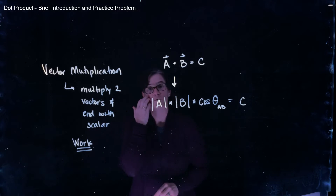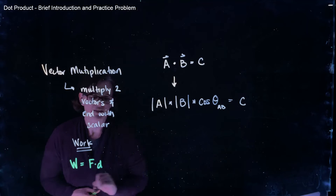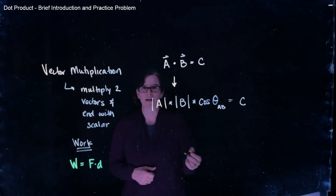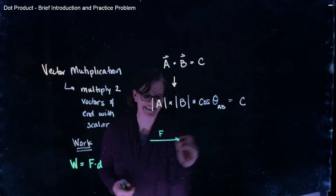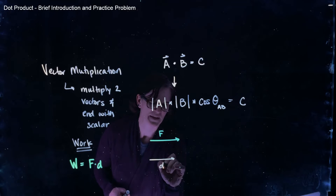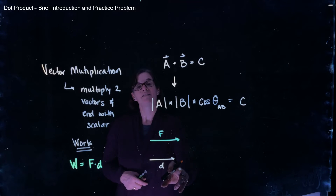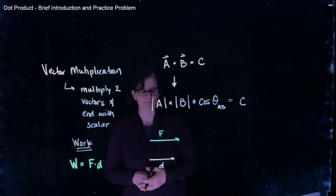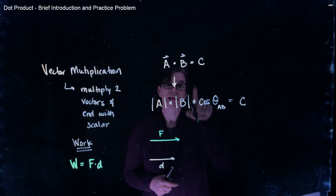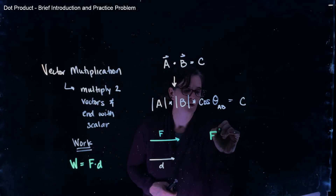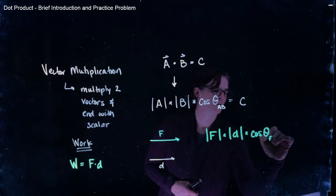Work is the dot product between the force applied on an object and the displacement over which that force occurs. If I have a force acting in the horizontal direction and that force acts over a displacement also in the horizontal direction, the work done is found by the dot product between the force and the displacement — the magnitude of the force times the magnitude of the displacement times the cosine of the angle between the force and the displacement.